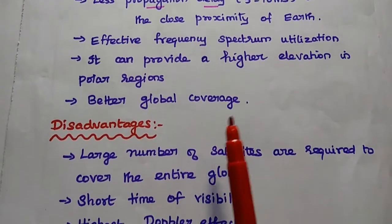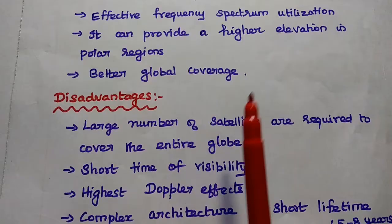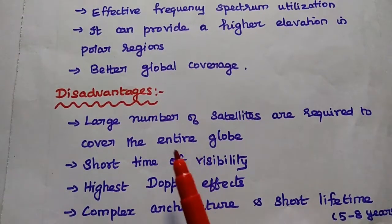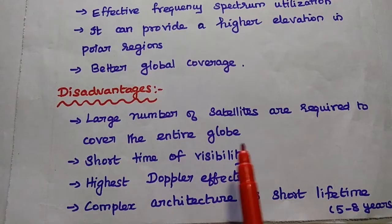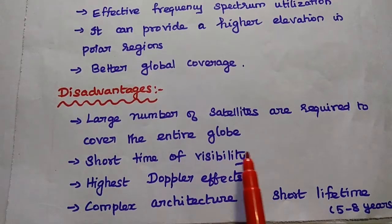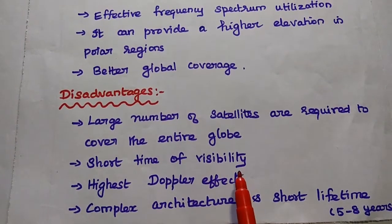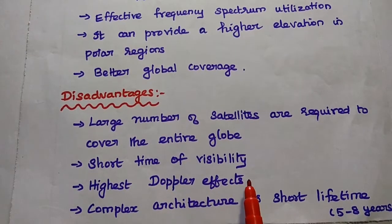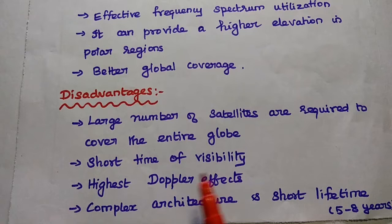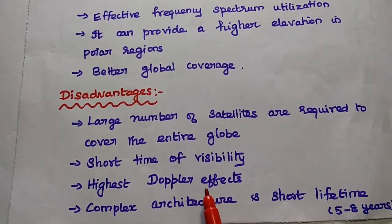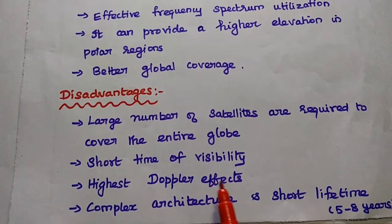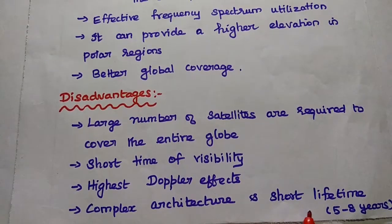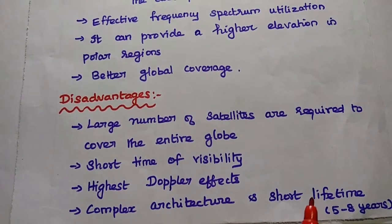The major disadvantages of low earth orbit satellites are: a large number of satellites are required to cover the entire globe, short time of visibility, and the highest Doppler effect is possible with LEO satellites. The architecture is also very complex in the space segment, and the lifetime is too short — only 5 to 8 years.